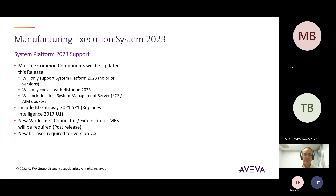MES 2023 only supports System Platform 2023, and System Platform 2023 only works with MES 2023 — they step together. We will be shipping BI Gateway, which is the new version of Intelligence — the latest release is 2021 SP1, so that will be on our media. There will also be a new Work Tasks connector and extension for MES, as Work Tasks 2023 also has a release coming out later this year that will match up with our release.